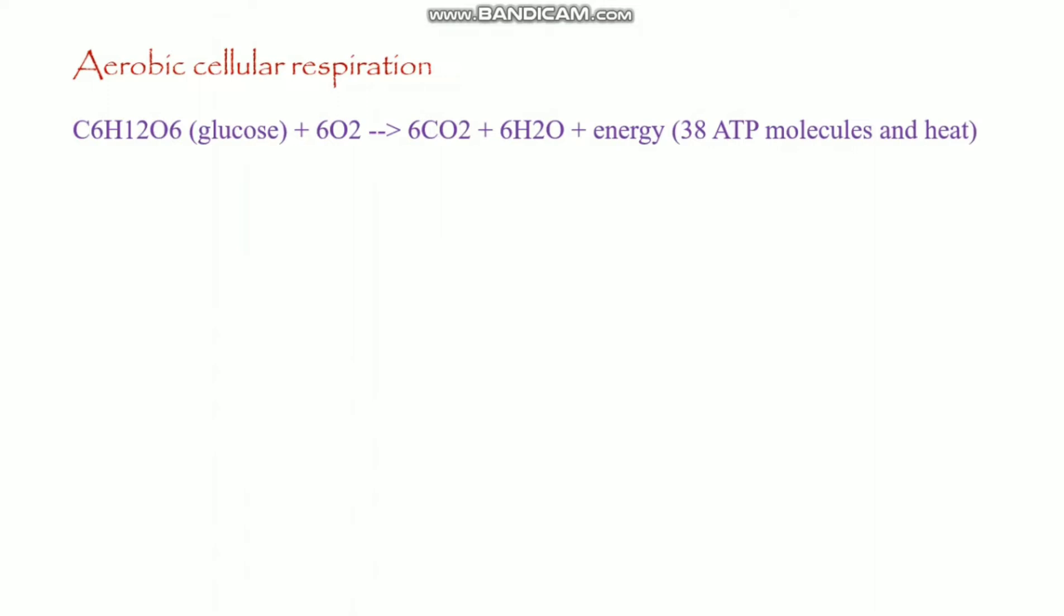This carbon dioxide is very much essential to regulate the pH. How? Let's see. This carbon dioxide reacts with water to form carbonic acid. This carbonic acid regulates pH. Later on, this carbonic acid dissociates to bicarbonate ion and H plus ion.